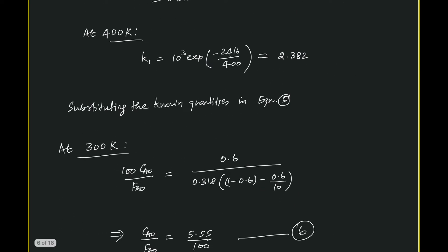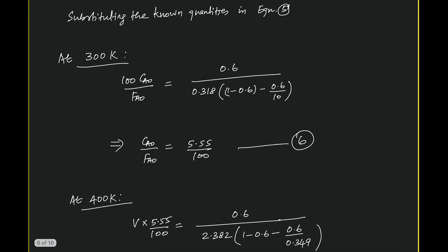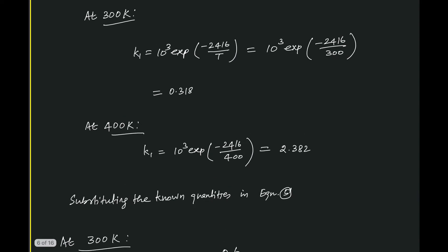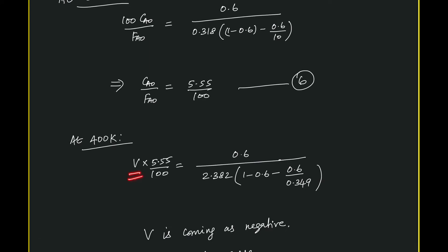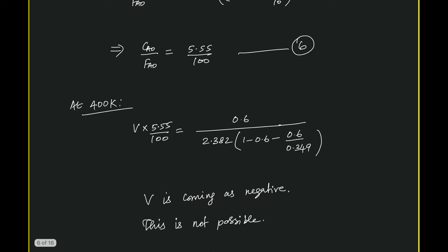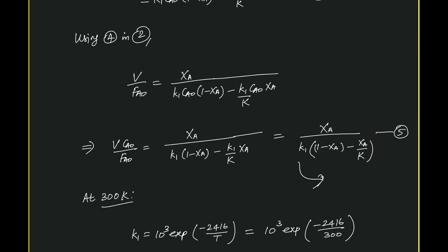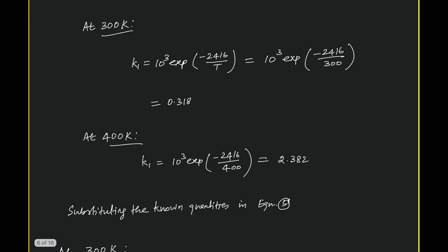At 300 Kelvin, using the MFR design equation and substituting known quantities — volume is 100 liters, conversion is 60%, and K1 at 300 Kelvin — we obtain Ca0/Fa0. For this same Ca0/Fa0, we are now operating the reactor at 400 Kelvin, and we are asked to find the volume. Substituting everything into the design equation with K1 now changed to its value at 400 Kelvin, we estimate the new volume.